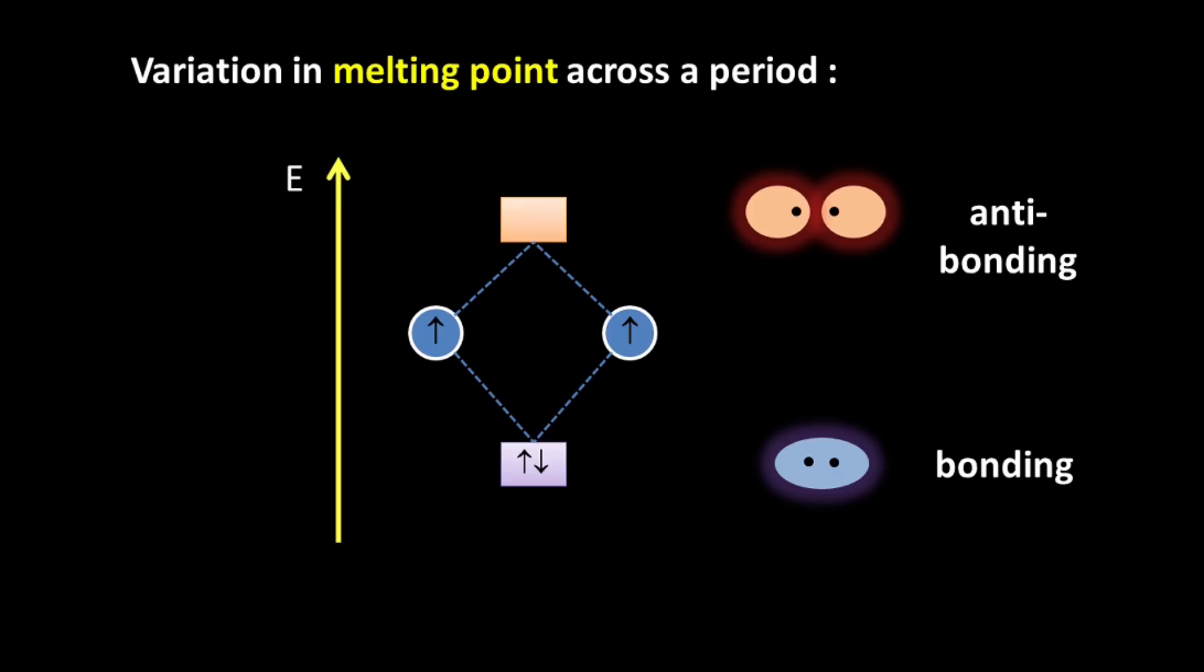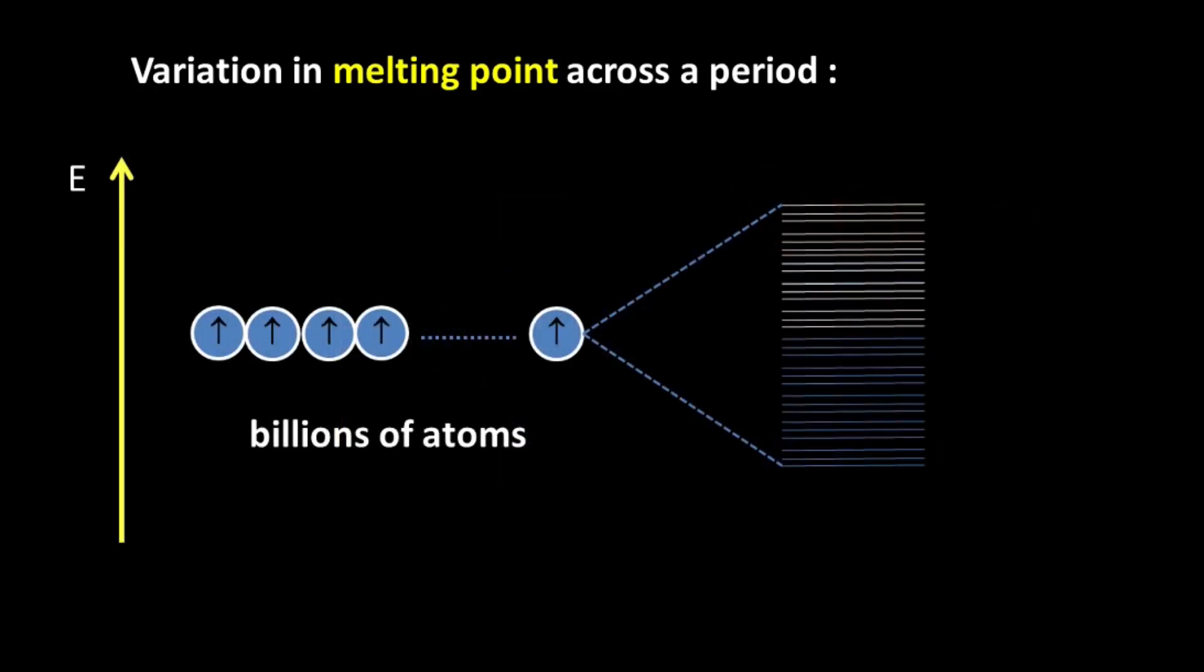Now in a metal lattice, there aren't only two atoms. There are in fact billions of metal atoms present in the lattice. So instead of having two molecular orbitals, we actually have billions of molecular orbitals, each very closely spaced to each other in energy.